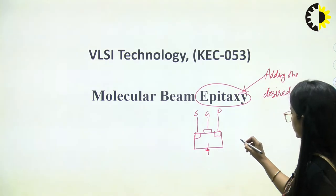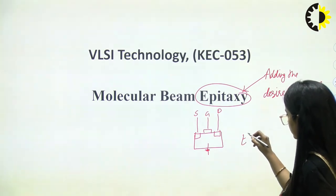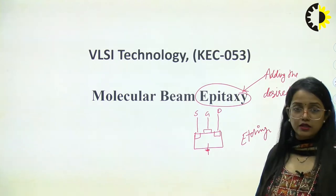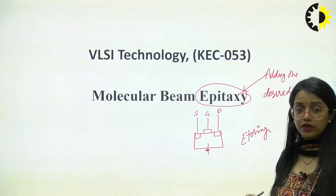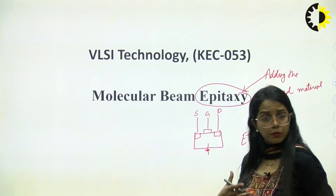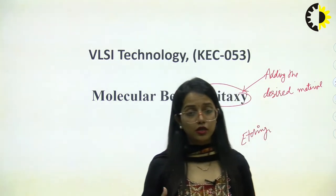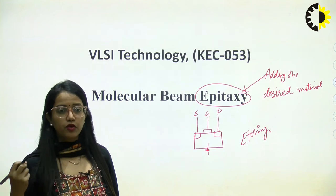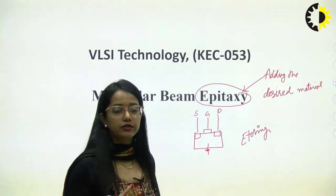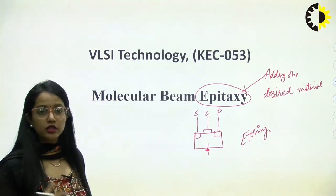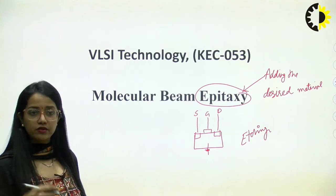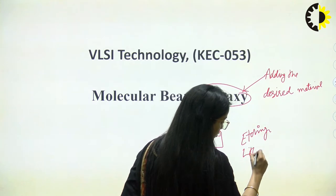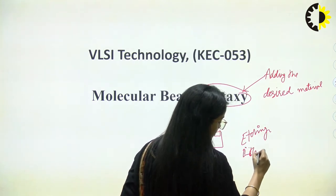For removal we can use etching. Etching will help us to clean — selectively removing some silicon dioxide from a specific place. That process of selective removal is lithography.